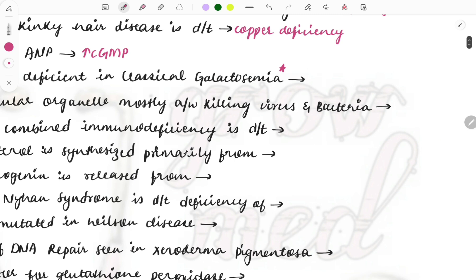Enzyme deficient in case of classical galactosemia? This is also an important topic - galactosemia - because frequent questions are asked on the clinical features. One important feature associated with this is cataract. Which enzyme is deficient? It is the Gal-1-PUT enzyme. Frequently questions are asked on this one.